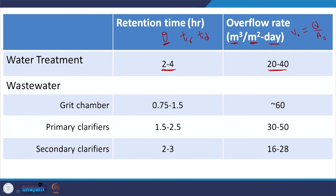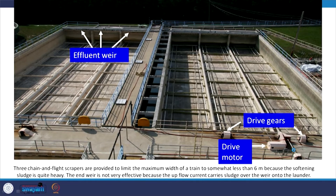Typical design values: for water treatment, retention time is 2–4 hours. For wastewater treatment, grit chambers have short retention times and high surface overflow rates since we only remove large inert particles. Primary clarifiers have increased retention time and lower overflow rates. Secondary clarifiers, which follow the biological process and handle floc-forming bacteria, have even higher retention times and lower overflow rates.